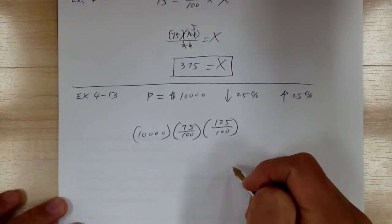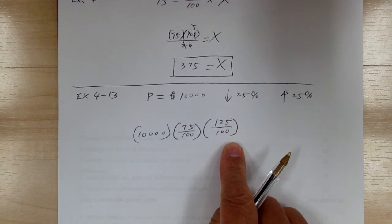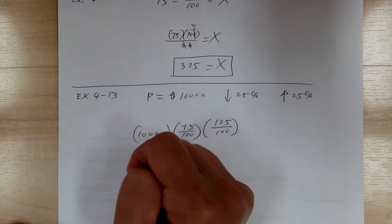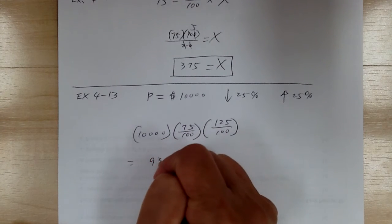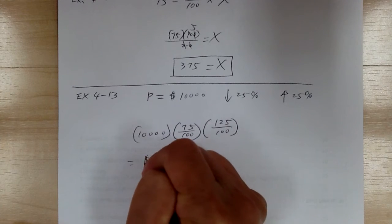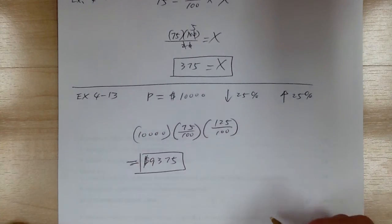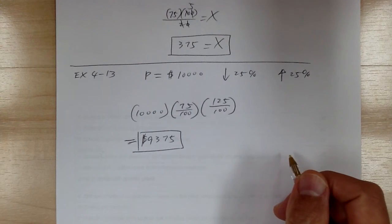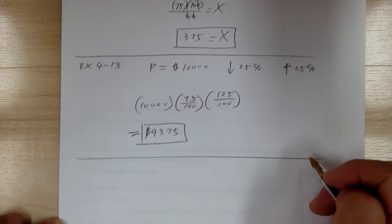So now you go and get your calculator and you multiply out and you end up with 9,375.